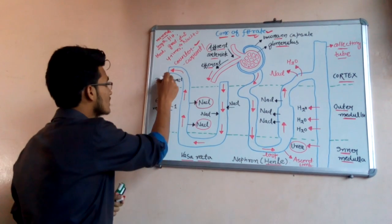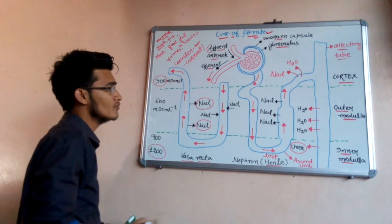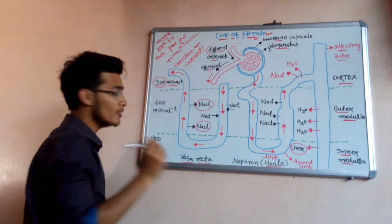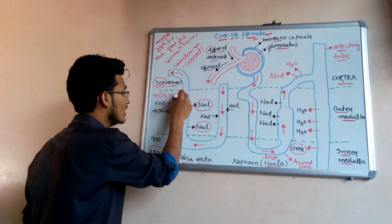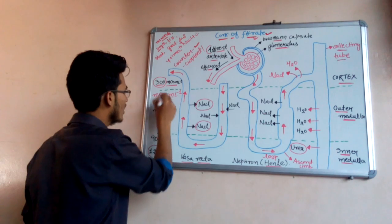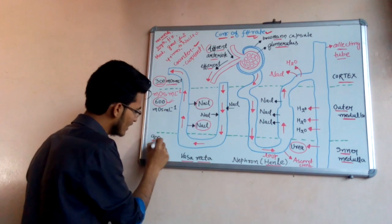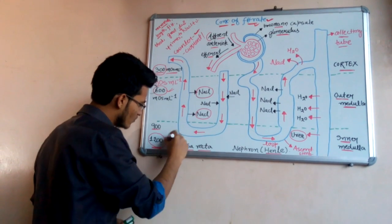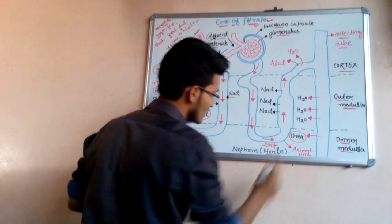The counter-current mechanism maintains a particular osmolarity in different regions of this diagram. The osmolarity in the cortex region is approximately 300 milliosmol per liter. In the outer medullary region it is about 600 milliosmol per liter. In the inner medullary region it is 900 milliosmol per liter, and in the lowermost region, nearest to the center, it reaches 1200 milliosmol per liter. The counter-current flow in the loop of Henle and the vasa recta maintains these different concentration levels.